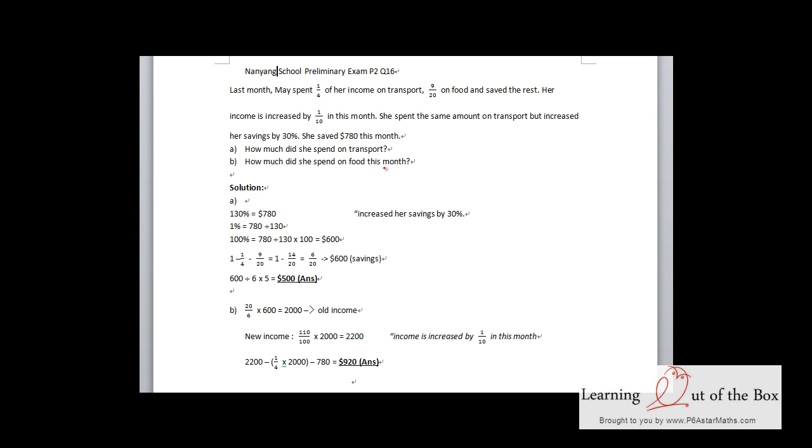Last month, May spent one quarter of her income on transport, 9/20 on food, and saved the rest. Her income increased by 1/10 this month. She spent the same amount on transport but increased her savings by 30%. She saved $780 this month.